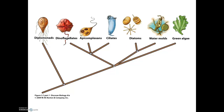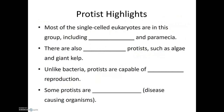When we zoom in just at the protists, these are the types of organisms we're talking about: diplomonads and dinoflagellates, ciliates, water molds, and surprisingly even algae. Algae includes seaweed along with organisms found in streams, ponds, and even occasionally in your water pitcher or aquarium. Most single-celled eukaryotes are in this group, including amoeba and paramecia. There are also multicellular protists, such as algae and giant kelp.